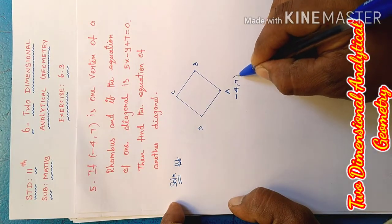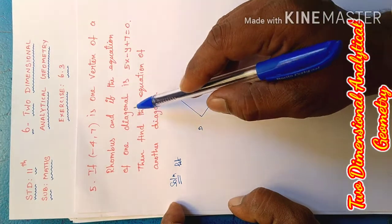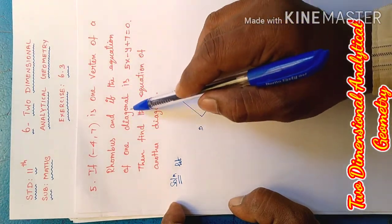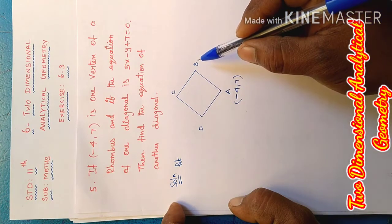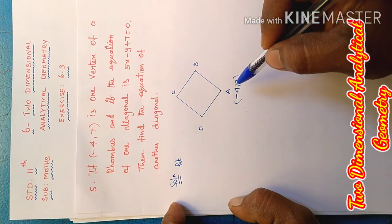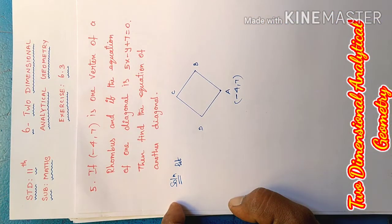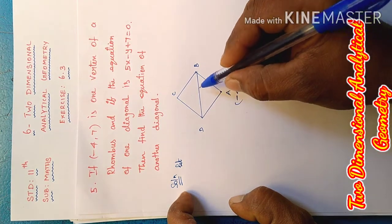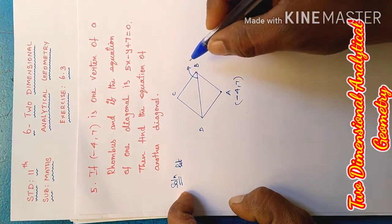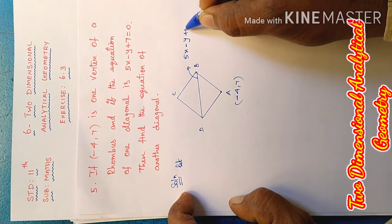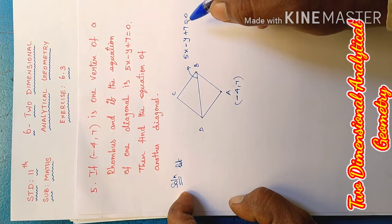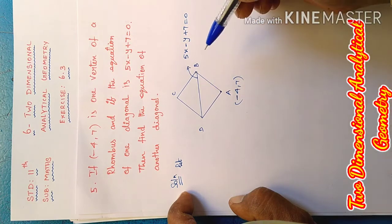One diagonal is given. The diagonal connects B and D. The diagonal equation is 5x - y + 7 = 0. We need to find another diagonal equation.